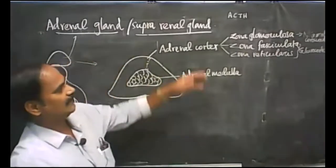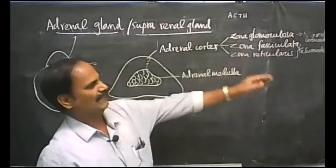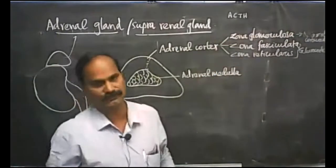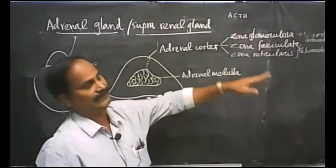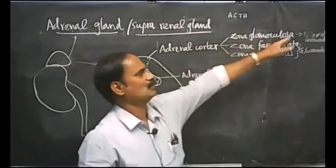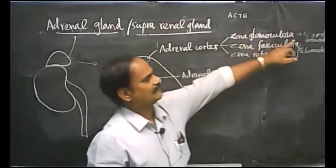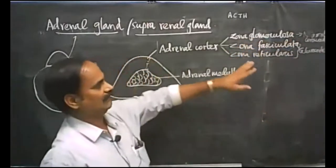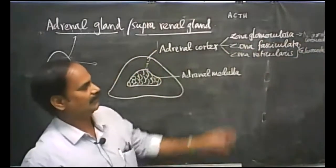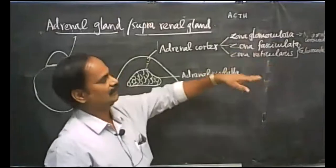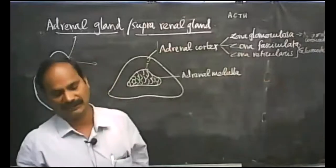So these are the hormones of the adrenal cortex — mineralocorticoid hormone and glucocorticoid hormone. Zona glomerulosa secretes mineralocorticoid hormone, zona fasciculata secretes glucocorticoid hormone, and zona reticularis also acts along with zona fasciculata to secrete glucocorticoid hormone.